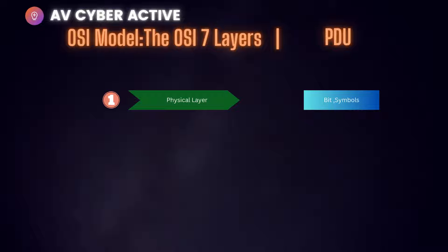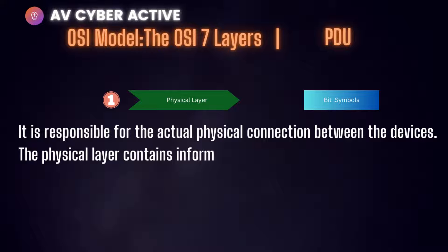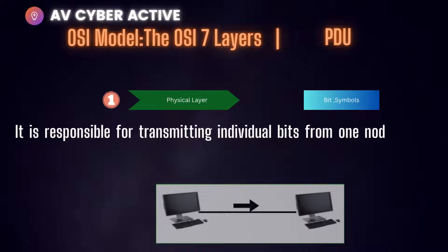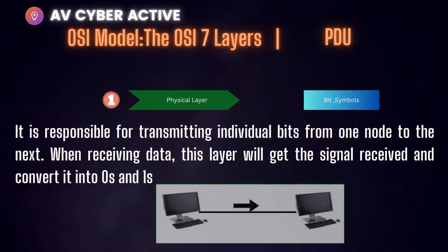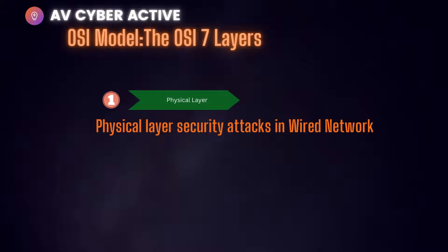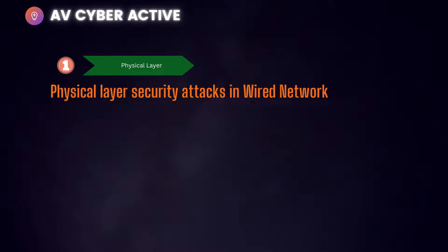What's happening at layer one, the physical layer? This is the lowest layer of the OSI reference model. It is responsible for the actual physical connection between devices, containing information in the form of bits and transmitting individual bits from one node to another. When receiving data, signals are converted into zeros and ones — binary — and then sent to the data link layer, layer two, which puts the frame back together. There are two categories of physical layer security attacks: attacks in a wired network and attacks in a wireless network.